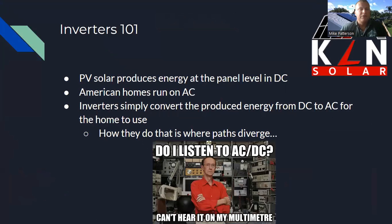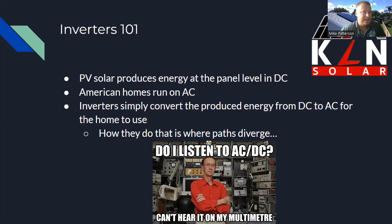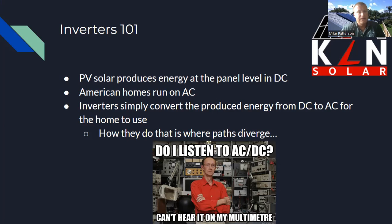Inverters 101. Most of you already know this, but solar systems produce energy at the panel level in DC. In the United States, our homes run on AC. All the inverter is doing is converting the produced energy from DC to AC for the home to use. How they go about doing that is what makes them different.